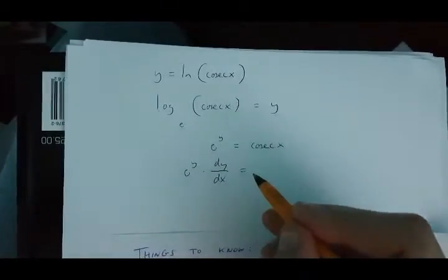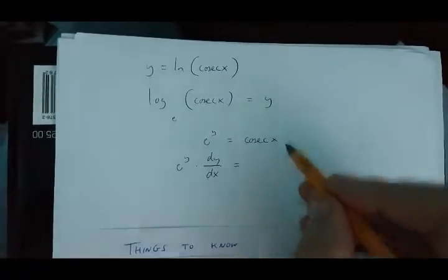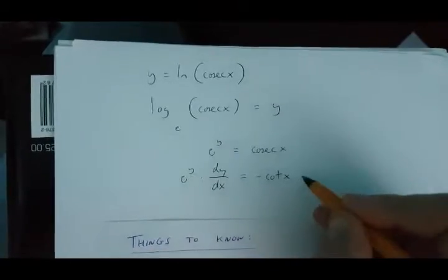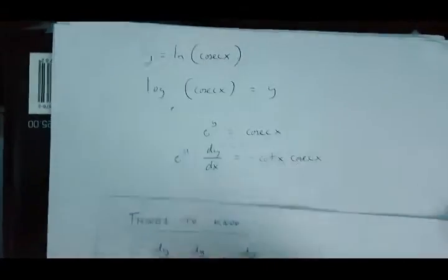And this is going to be equal to cosec x differentiated, which is simply minus cot x times cosec x.